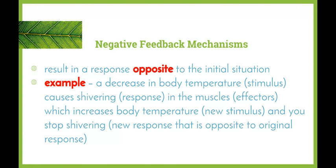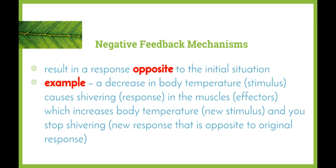Negative feedback mechanisms result in a response that is opposite to the initial situation. Temperature increasing or decreasing is a perfect example. If we have a decrease in body temperature — the decrease is the stimulus — this causes shivering, which is the response in the muscles, acting as the effectors. This increases our body temperature, which is the new stimulus, and then shivering stops. A new response brings about a stimulus that is opposite to the original stimulus, and therefore the response is opposite to the original response.